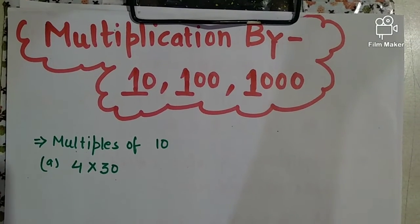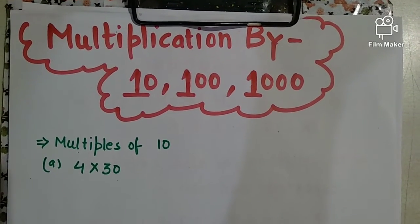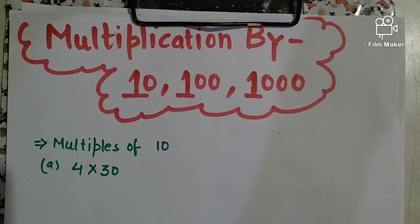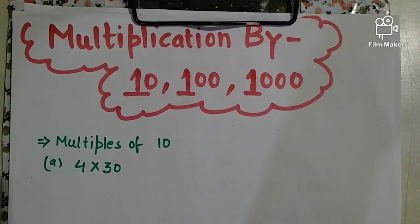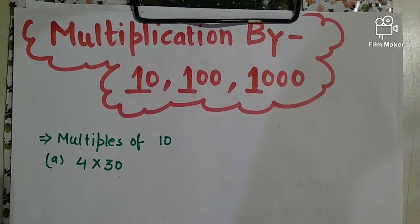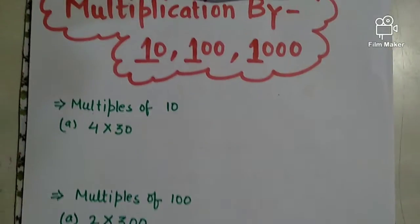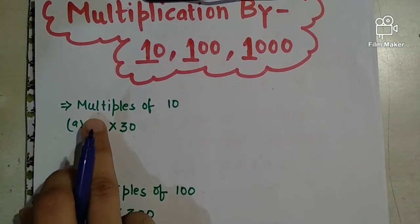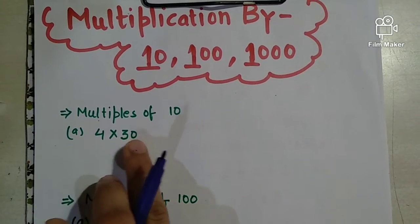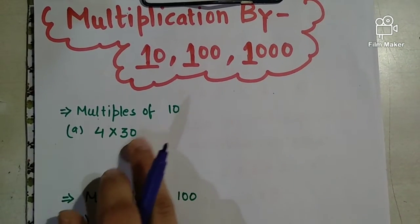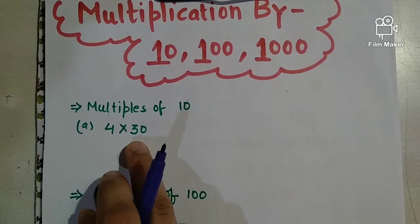Now let's move to some other important concepts about multiplication. If we have to multiply a number with ten, hundred, or thousand, how can we solve that? For example, we have four into thirty — thirty is in the tens. So how can I multiply four into thirty? Thirty means three tens.